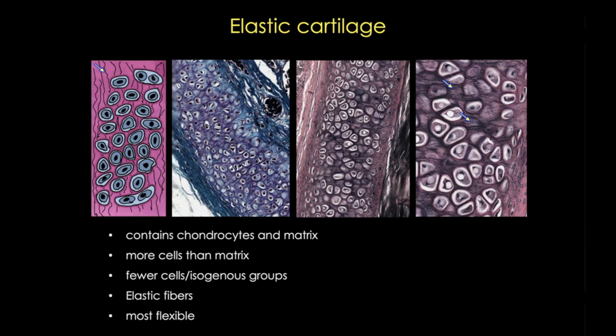Now remember, type 2 collagen fibers are too small to be seen in a light microscope, so if you see these thin fiber-like threads, it's going to be elastic cartilage. And it's these high numbers of elastic fibers that make elastic cartilage the most flexible. Take a hold of your ear and twist it back and forth to see just how flexible elastic cartilage is.